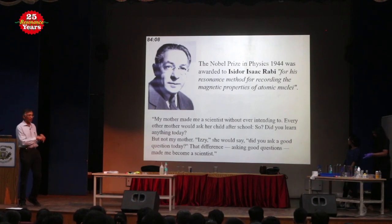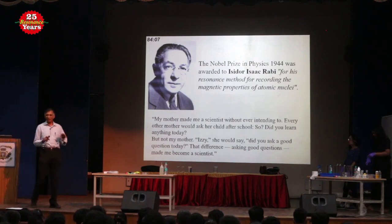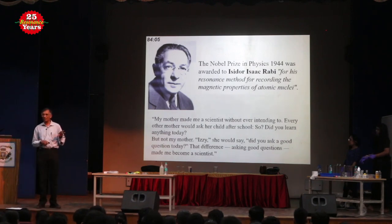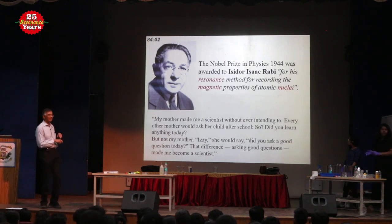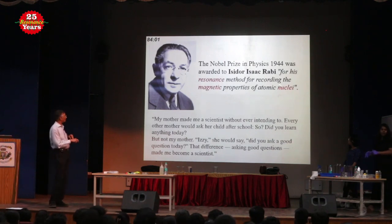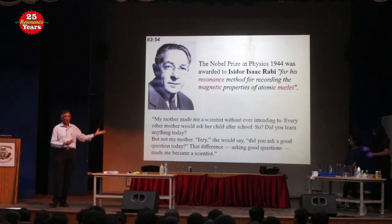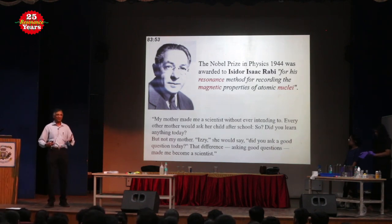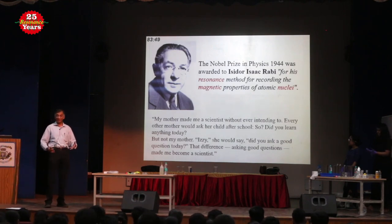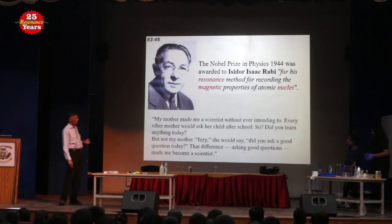I.I. Rabi was a physicist who got the Nobel Prize in 1944 for his resonance method for recording the magnetic properties of atomic nuclei. This is from his Nobel lecture. The technique — highlighted in reverse order — is nuclear magnetic resonance. That is a very powerful tool, although discovered by physicists; chemists and now biologists are also sharing the benefits of nuclear magnetic resonance, and of course MRI imaging by medical doctors.